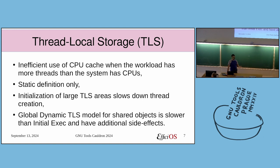We have different TLS models: global dynamic and initial exec. If you want to be certain there will be no failure in terms of allocation — as far as I know with the current glibc implementation — if you have TLS variables in shared objects, they need to be global dynamic. Global dynamic TLS is allocated lazily and the allocation can fail, so that's not great. With the initial exec model, it can happen that you can't dlopen a shared object that uses initial exec TLS because we have to reserve a certain amount up front at process start and if you use that up, there's no fail-safe. If you use global dynamic, it can do memory allocation lazily with calls to the memory allocator with locks.